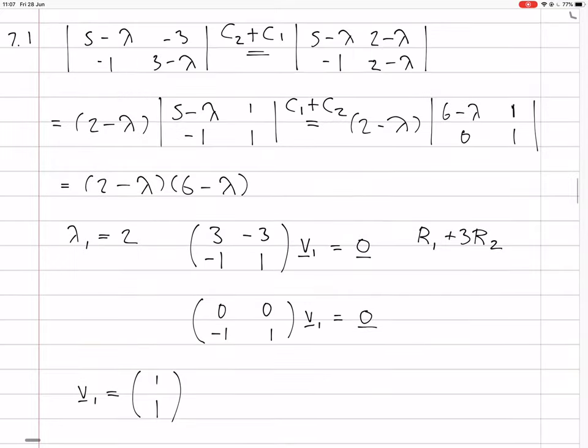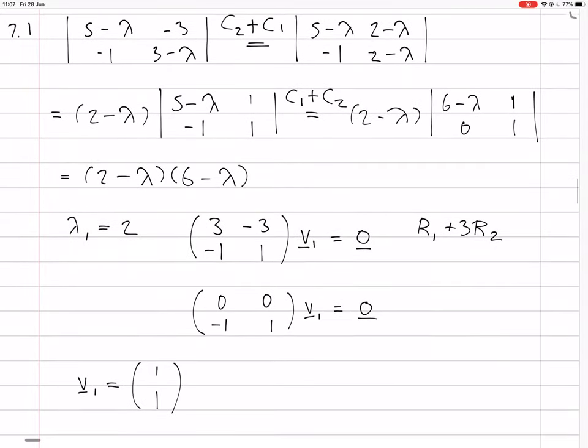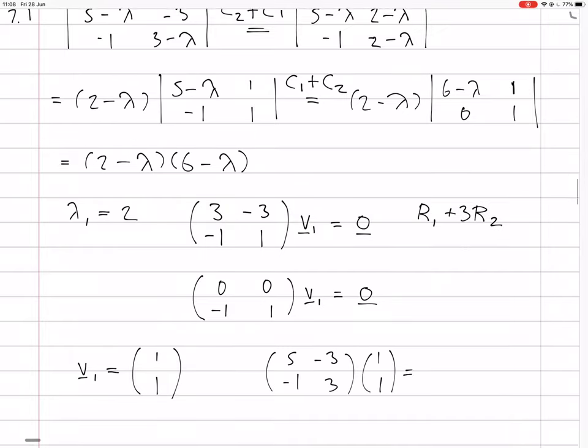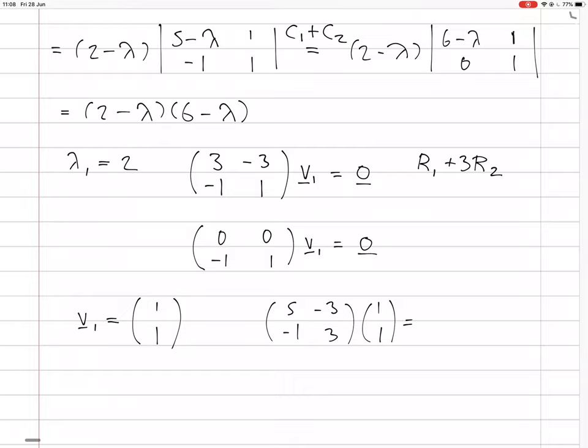We could just check that quickly. The actual matrix was originally 5 minus 1 minus 3, 3. You multiply that by 1, 1. You get, on top, you get 5 minus 3 is 2. Minus 1 plus 3 is 2. Yes. That is indeed 2 times 1, 1. So that's correct eigenvector eigenvalue.